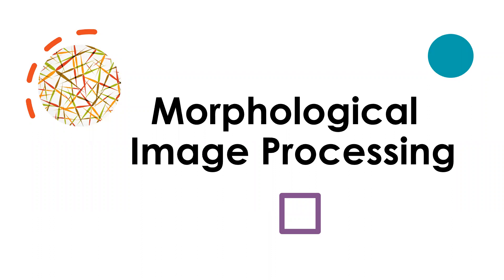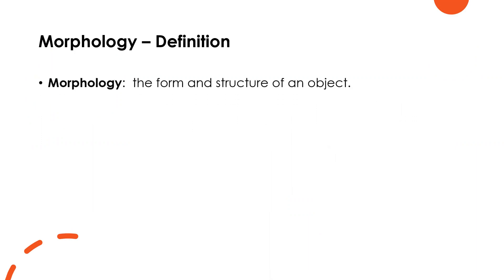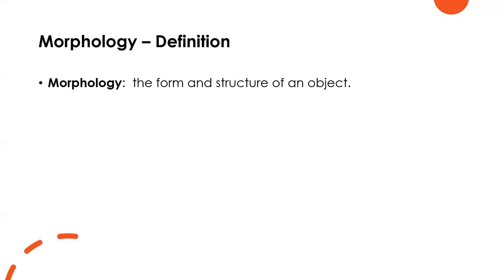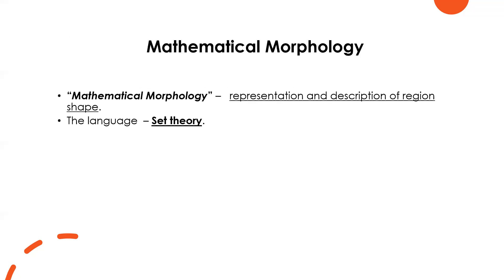Welcome to all of you. In this video we are discussing about morphological image processing, which is an important part of digital image processing. First we will see the definition of morphology — it is a branch of image processing that deals with the form and structure of an object. This morphological image processing is used to extract image components for representation and description of region shapes such as boundaries and skeletons of the entire image.